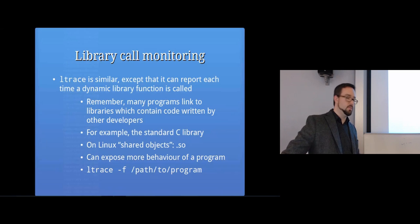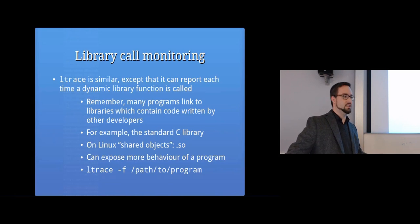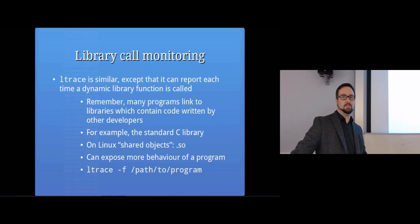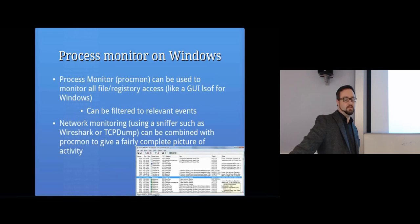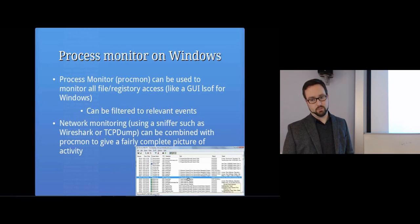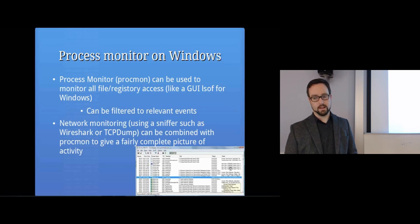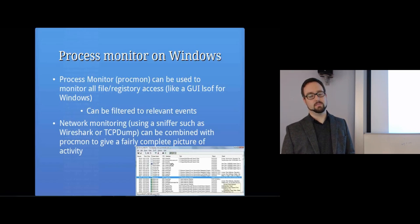Library call monitoring is essentially the same thing as system call monitoring, except instead of listening for calls out to the kernel, it's listening to calls to shared code - dynamically linked libraries. We were talking before about dynamically compiled programs using a lot of code that's sitting on the computer, like standard C libraries. You can listen in on those calls, which can also tell you a lot about what a program is doing. On Windows, you can use Process Monitor (ProcMon), which shows you a list of all the processes and all the files and registry settings a program changes.